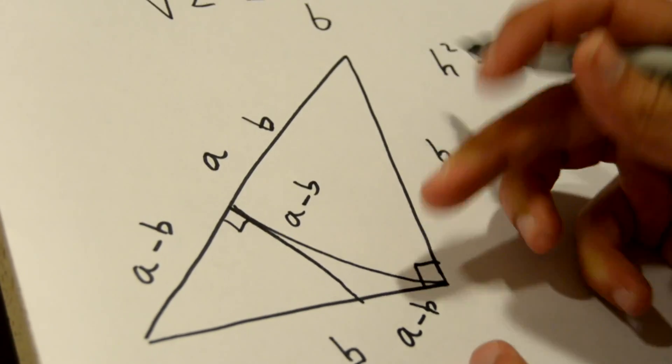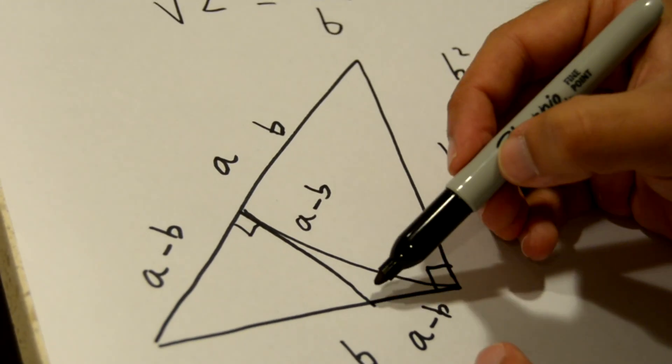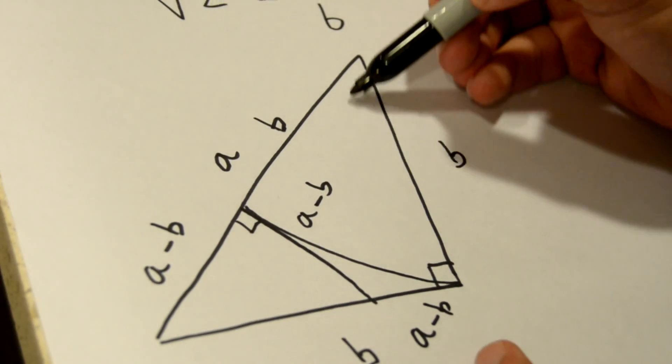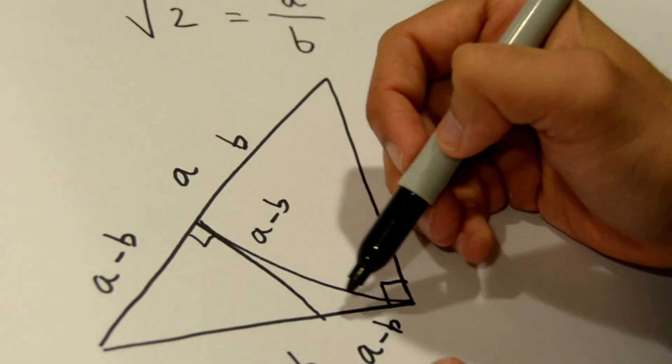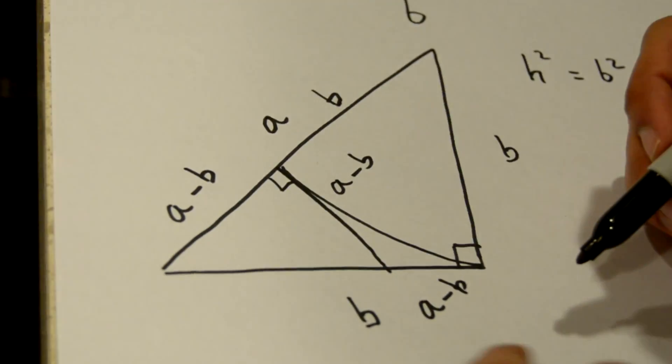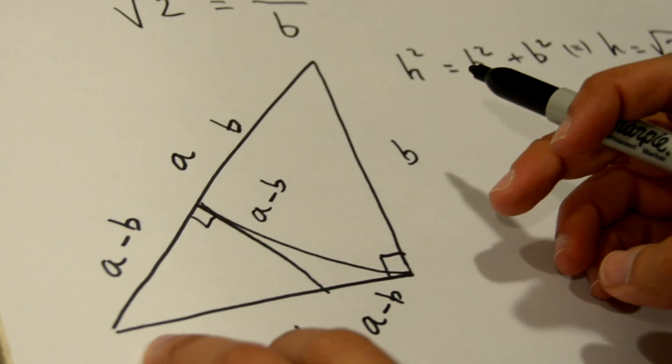Why? Because these two segments are symmetrically aligned, so the length of these two segments are the same. Now if the length of this side is also b,